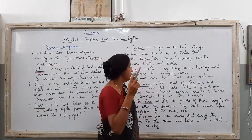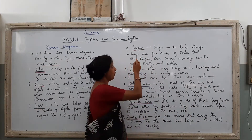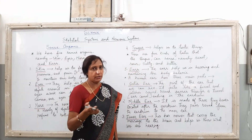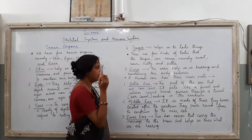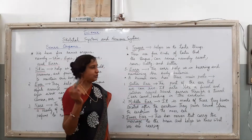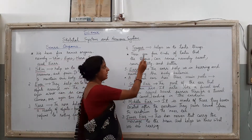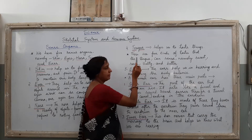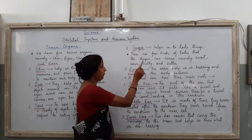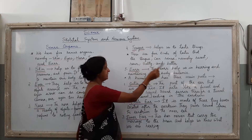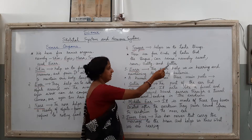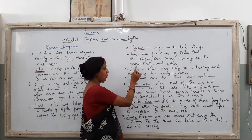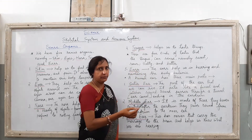Moving further, we are going to talk about the next sense organ, that is the tongue. As you know, children, the tongue helps us to taste things and there are four kinds of tastes that the tongue can sense: namely sweet, sour, salty and bitter.